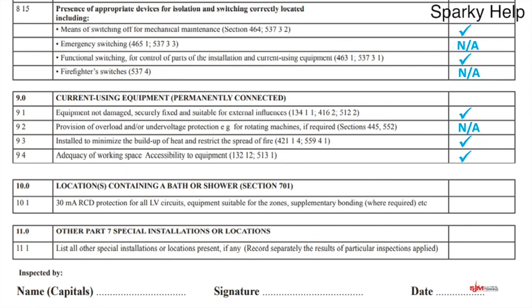Locations containing a bath or shower — most houses have a bath or shower. If they do, you'll probably have an RCD for the low voltage circuits, equipment suitable for zones, and supplementary bonding where required. If you look at the regulations, if you put an RCD in you may not need the supplementary bonding. If you have a bathroom, it's going to be a tick.